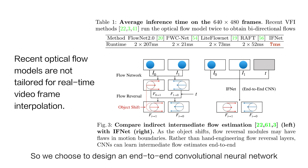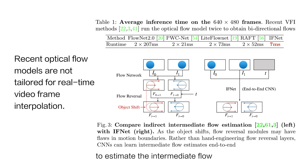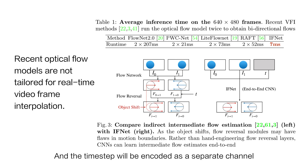We choose to design an end-to-end convolutional neural network to estimate the intermediate flow, and the time step will be encoded as a separate channel.